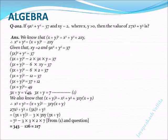9x² + y² = 37. This 9x² can be written as (3x)². Therefore (3x)² + y² = 37. (3x)² + y² can be written as (3x + y)² - 2 × 3x × y = 37. Given that xy = 2, it becomes (3x + y)² - 6 × 2 = 37.